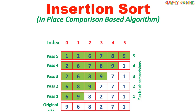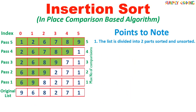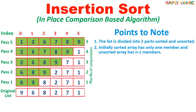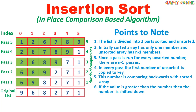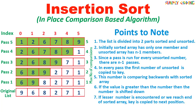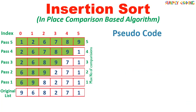With this the array is sorted. A few points to note: the list is divided into two parts, sorted and unsorted. Initially sorted list has only one member and unsorted list has n-1 members. Since a pass is run for every unsorted number, there are n-1 passes. In every pass, the first number of unsorted array is copied to the key. The number is compared backwards with the sorted array. If the value is greater than the number, then the number is shifted down. If a lesser number is encountered or we reach the end of sorted array, key is copied to the empty position next to it. Now let's see how we will write the pseudo code for it.